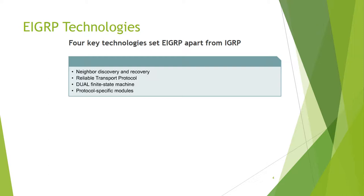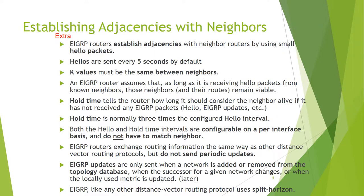EIGRP includes neighbor discovery and recovery, a reliable transport protocol, and a user-friendly DUAL finite state machine. Adjacency with a neighbor router is established using small hello packets. Hello packets are sent every 5 seconds by default.